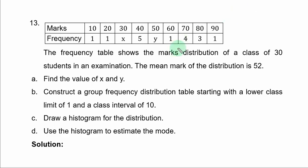Question 13. The frequency table shows the mark distribution of a class of 30 students in an examination. The mean mark of the distribution is 52. Part A: Find the value of x and y. Part B: Construct a grouped frequency distribution table starting with a lower class limit of 1 and a class interval of 10. Part C: Draw a histogram for the distribution. Part D: Use the histogram to estimate the mode.